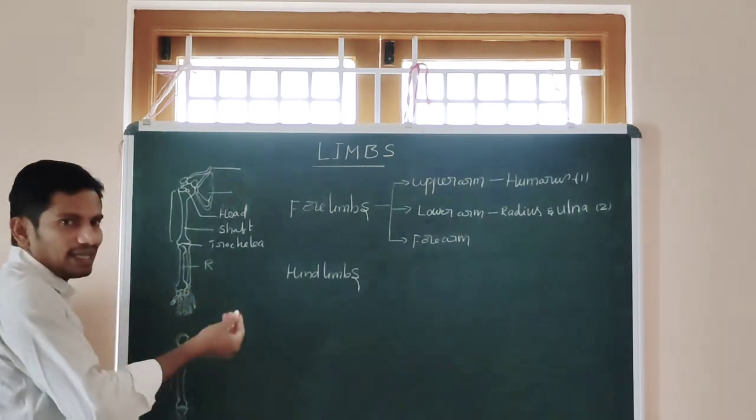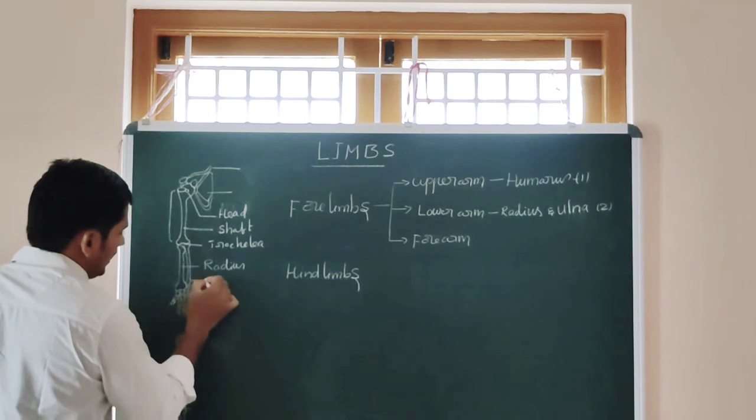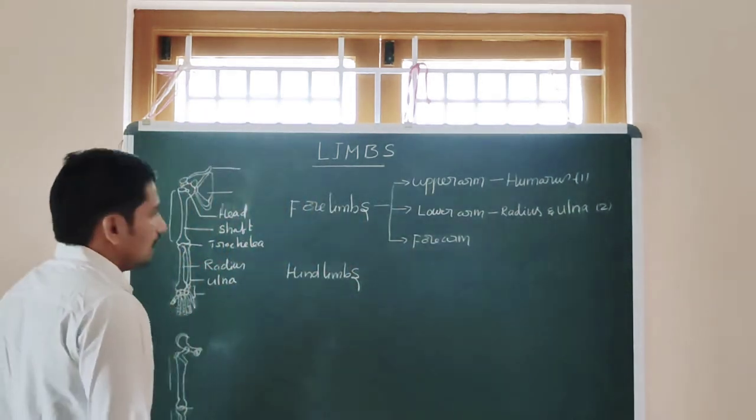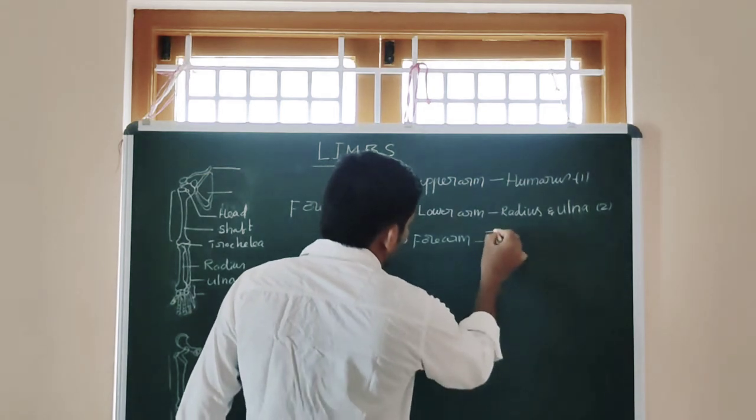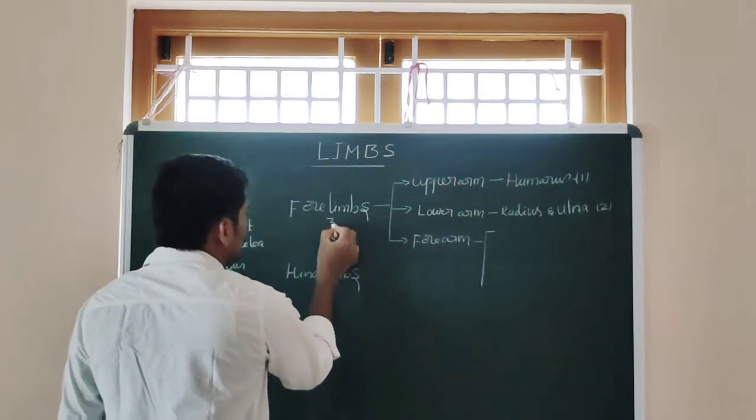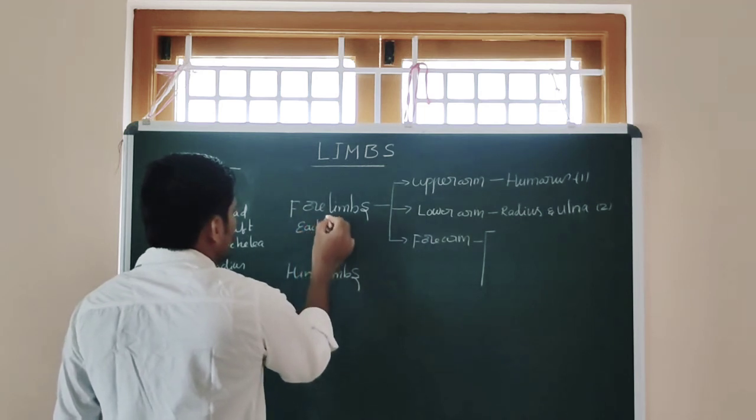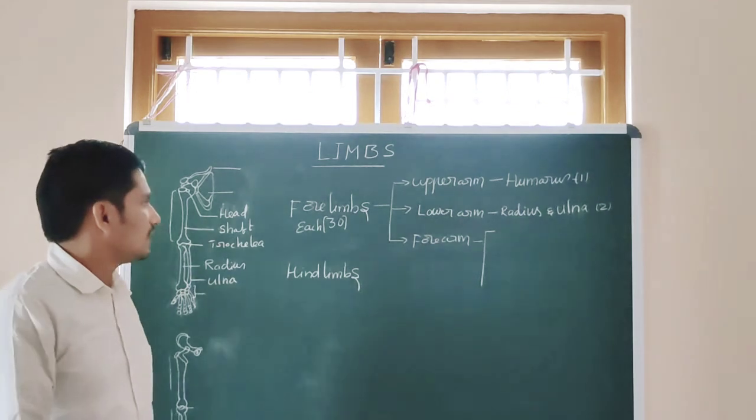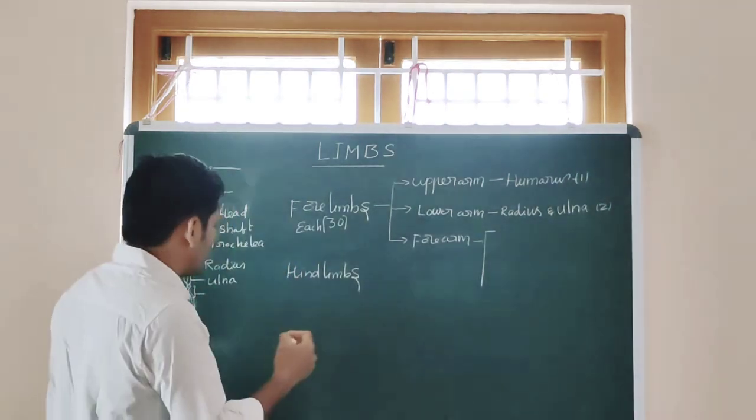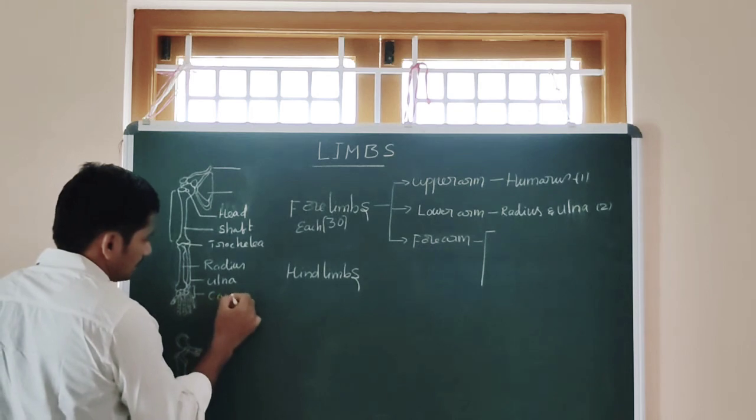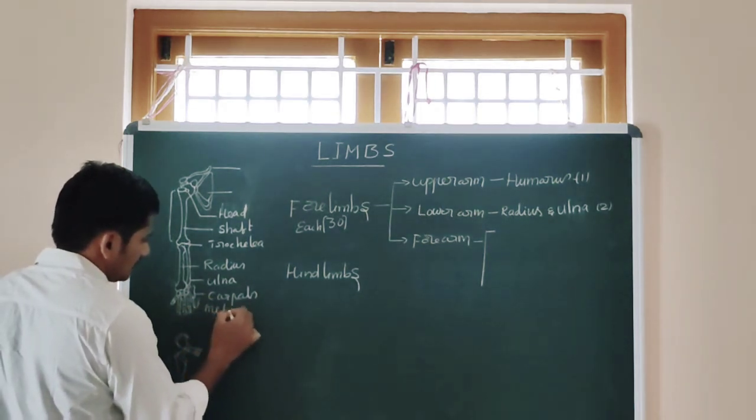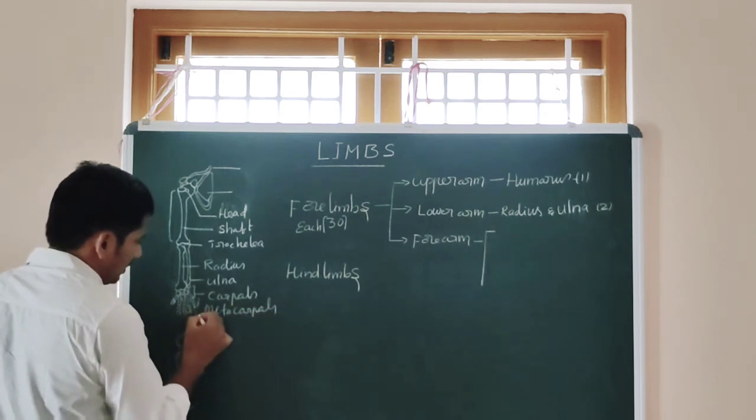Here radius is thicker than the ulna, and this is the ulna. The lower arm - we are talking about the lower arm. Lower arm consists of 27 bones: 8 plus 2 equals 29, plus 1 equals 30 total. Each forelimb has 30 bones. These are the forelimbs.